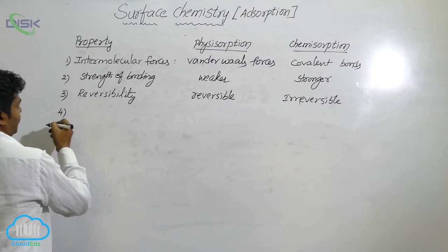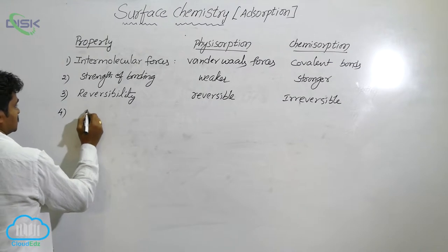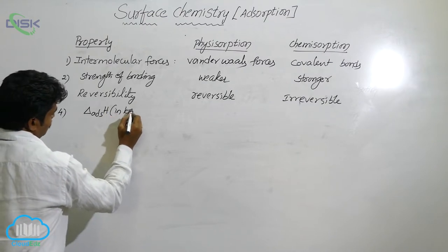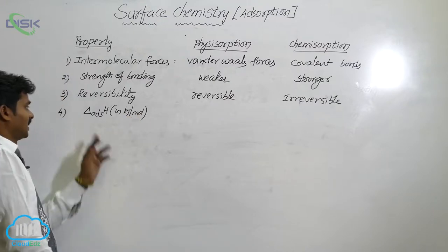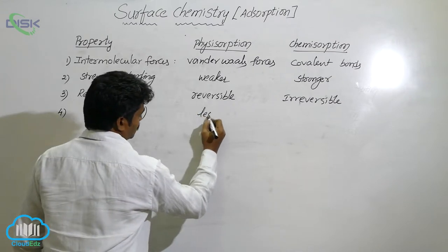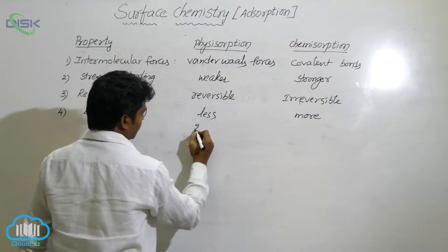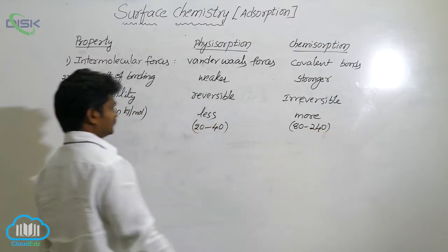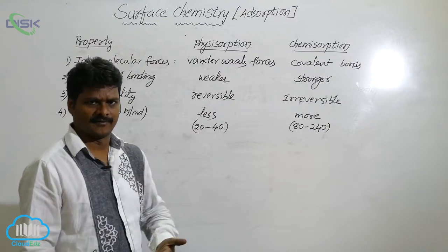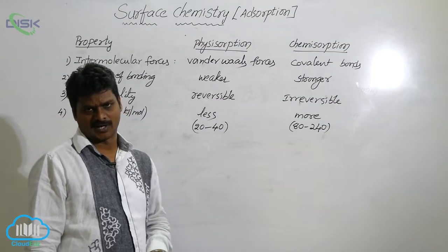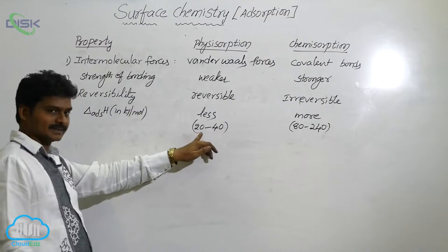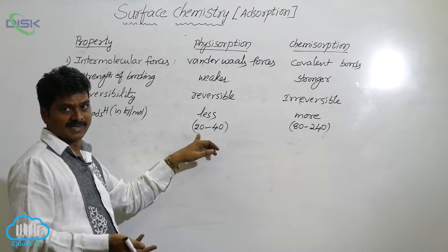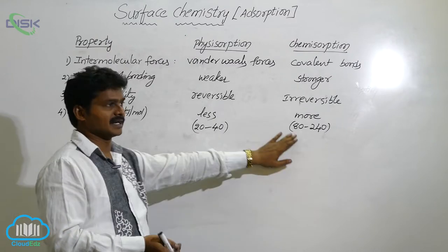The fourth property is enthalpy of adsorption, denoted delta H ads, measured in kilojoules per mole. In physisorption, the enthalpy of adsorption is less — around 20 to 40 kJ/mol — but in chemisorption it is more, around 80 to 240 kJ/mol. Enthalpy of adsorption is the amount of heat released when one mole of adsorbate is adsorbed. Since energy is released, it carries a negative sign: delta H is −20 for physisorption and −80 for chemisorption.